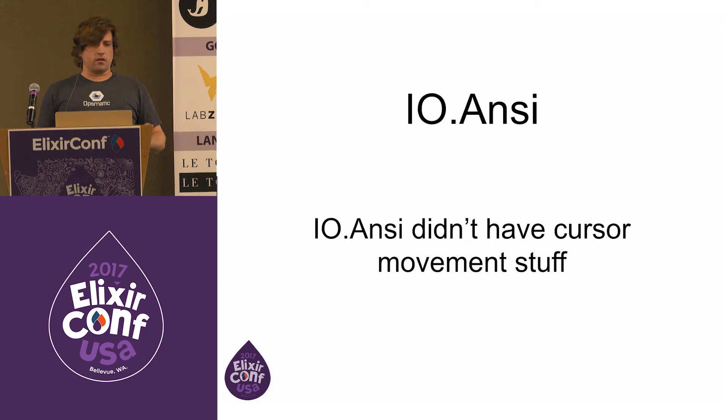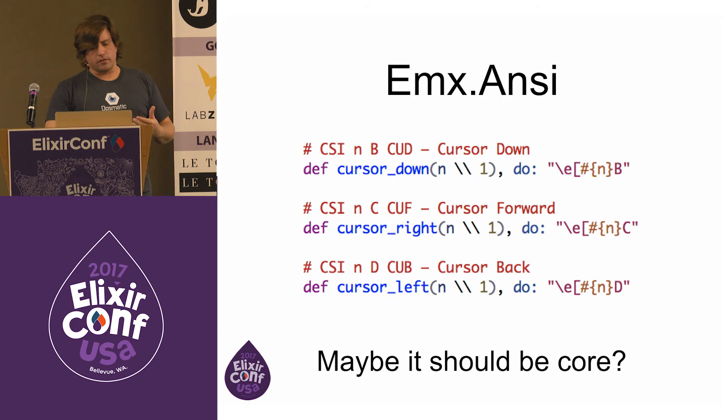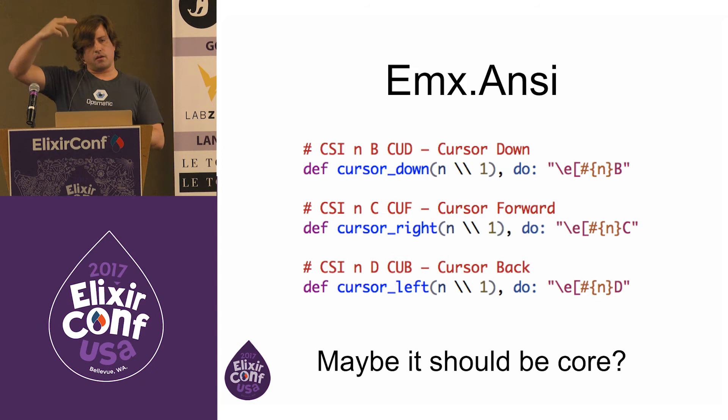Elixir has IO.ANSI but really all it has is the coloring stuff — what you need for IEx and the help command. So I had to go and implement all of the cursor movement commands. This is where you get into yak shaving: 'I'm going to draw the screen — oh, I don't have a cursor move command,' so I had to create this little library and add all these cursor down commands and spend time reading through the ANSI spec on Wikipedia.